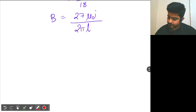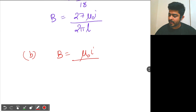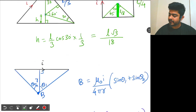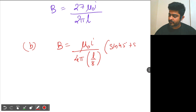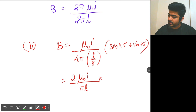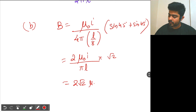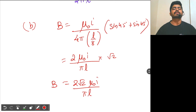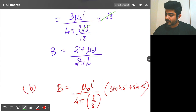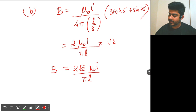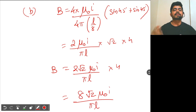For part B, using the formula μ₀i by 4πr with distance r = L by 8: B per side = μ₀i by 4π times (L/8) times (sin 45° + sin 45°), giving μ₀i by πL times 2 root 2. But this is the field due to one segment — I have to multiply by 4 for all four sides. So the net magnetic field B at the center of the square is 8 root 2 μ₀i by πL.